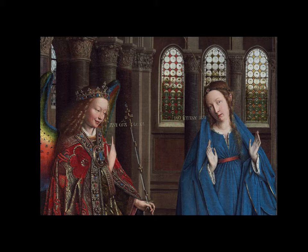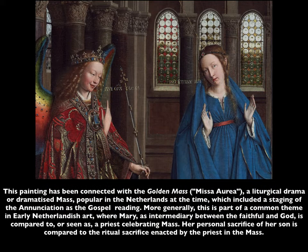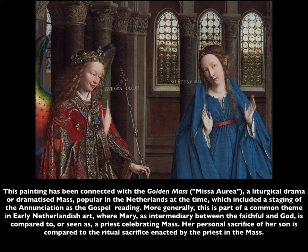Art historians have connected this painting with the Golden Mass — the Mesa Aurea — a liturgical drama or dramatized mass popular in the Netherlands at the time, which included a staging of the Annunciation as the Gospel reading. More generally, this is part of a common theme in early Netherlandish art where Mary, as intermediary between the faithful and God, is compared to or seen as a priest celebrating mass. Her personal sacrifice of her son is compared to the ritual sacrifice enacted by the priest in the mass, so both Mary and Gabriel are seen as enacting a priestly drama.